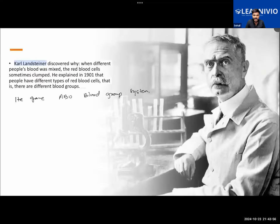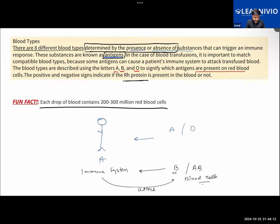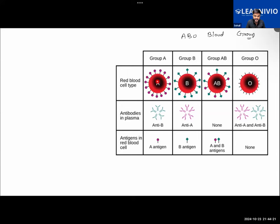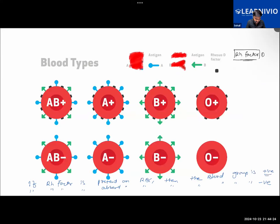In order to understand this topic, just understand this much: there are eight different blood types in humans. Respectively: A positive, A negative, AB positive, AB negative, B positive, B negative, O positive, and O negative. In total, four plus four equals eight blood types.